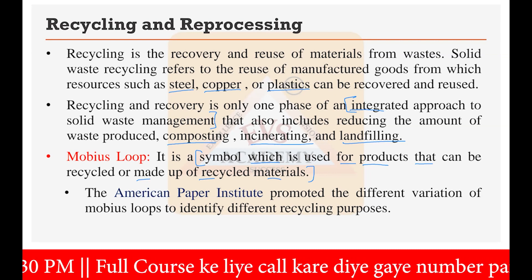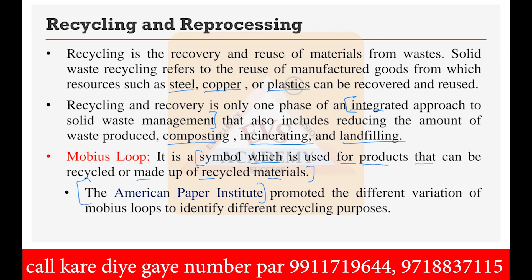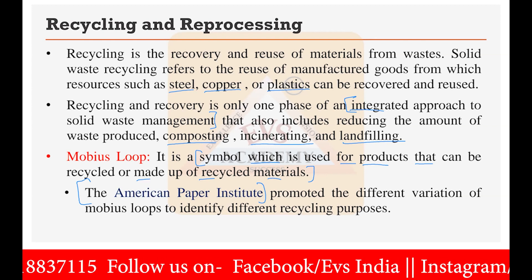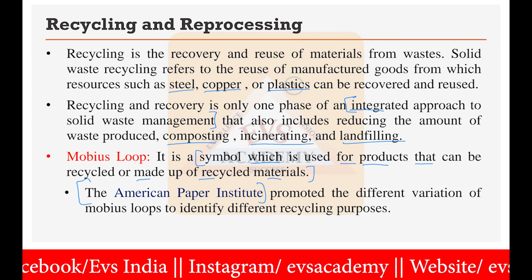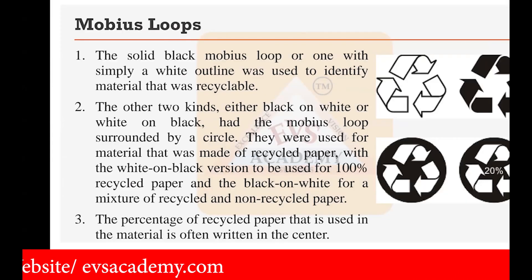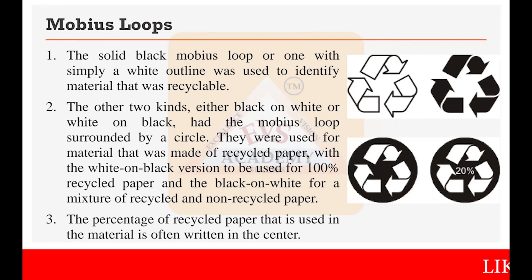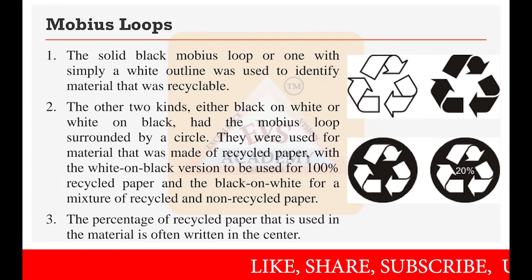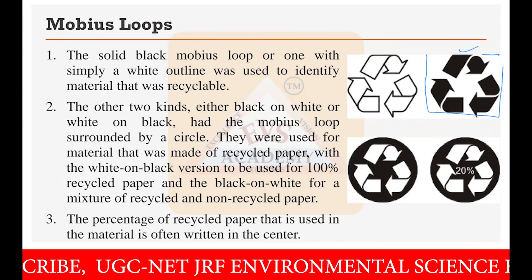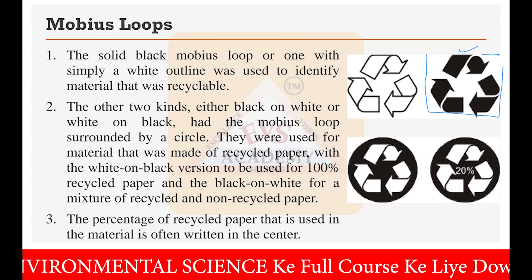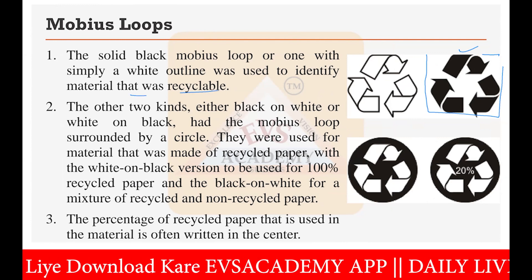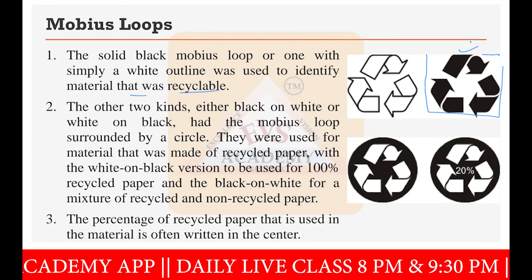The American Paper Institute was the main institute involved in promoting different variations of Mobius Loops to identify different recycling purposes. Let's see the types. The first type is the solid black Mobius Loop with a white outline on a white background. This is used to identify material that is already recyclable — meaning that product can be used again to manufacture the same type of product.